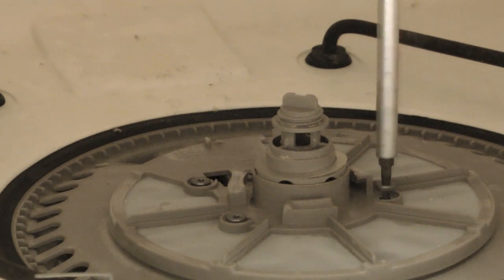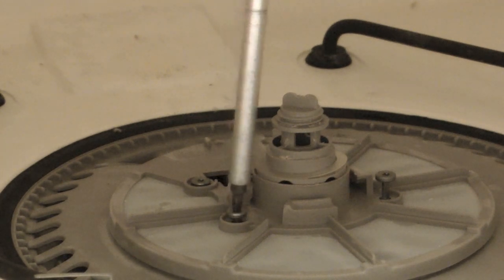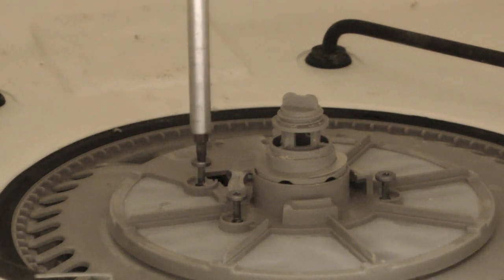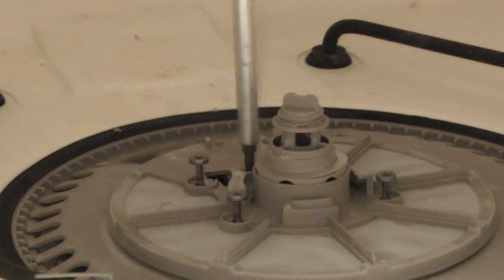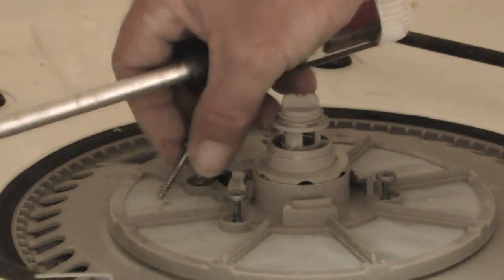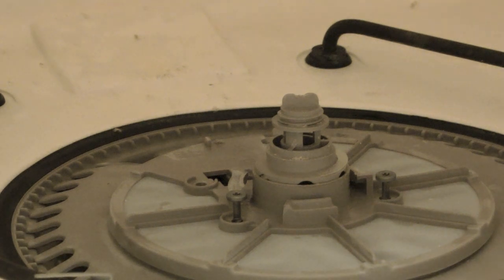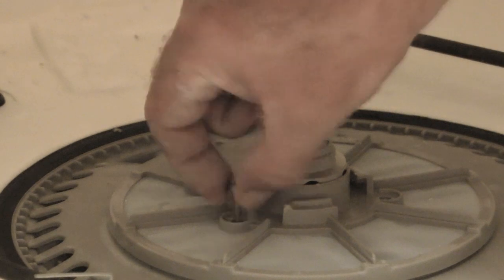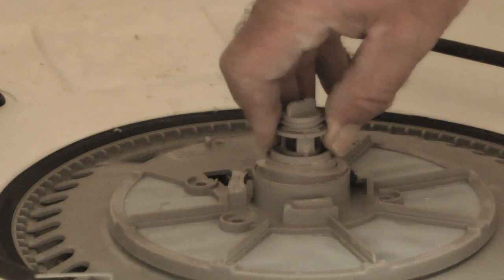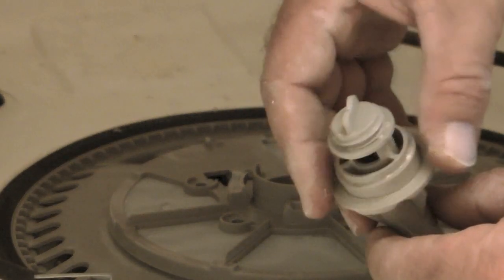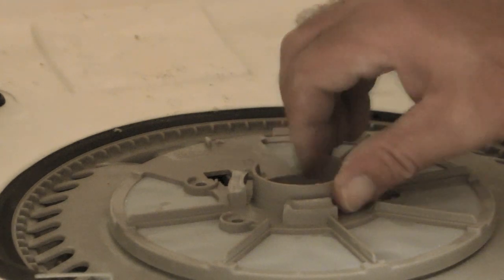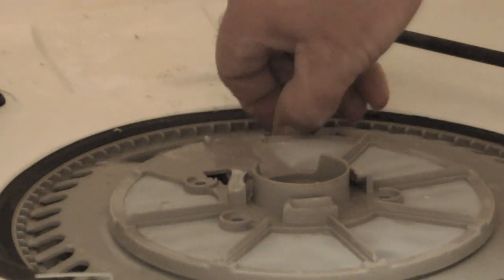Next there are four Torx head screws that I need to remove so that I can access the sump. These are T20 size Torx head screws. Next there are three screws. I can go ahead and pull the center piece out of the cover that goes on the sump. Notice that it has a plastic washer on top. You want to make sure that you don't lose that. Then I can go ahead and pull the screen and the center piece that covers the sump up and out.